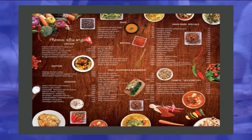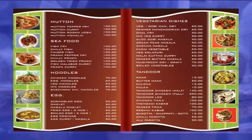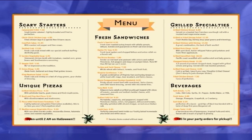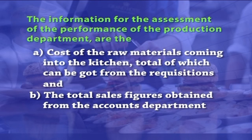If the variance is substantial, immediate corrective action is essential to prevent losses. The most important aspect is the revision of standard recipes of the items offered on the menu, which should be on a periodic basis. The information for the assessment of the performance of the production department are cost of the raw materials coming into the kitchen, the total of which can be got from the requisitions, and the total sales figures obtained from the accounts department. A food cost report is prepared and compared with the budgeted food cost.